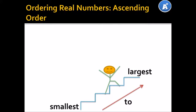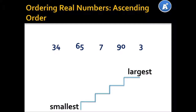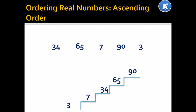Let's look at an actual example. We have 34, 65, 7, 90 and 3. Now, if we are to put them in ascending order, we start with the smallest number, which will be 3. Then 7, 34, 65 and 90. Now, they are in ascending order.